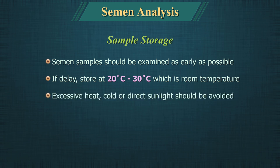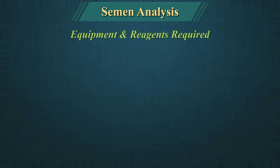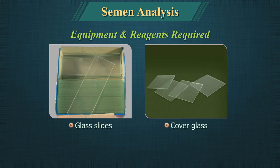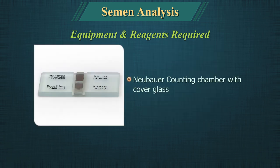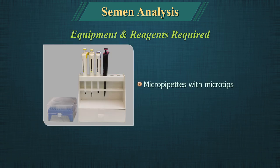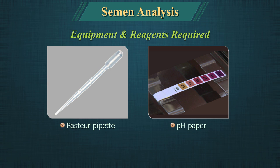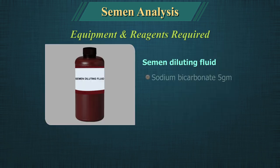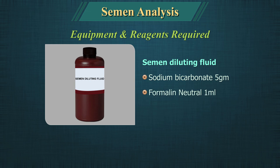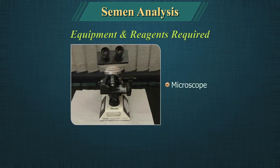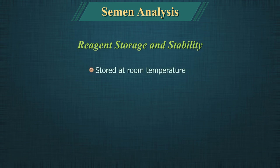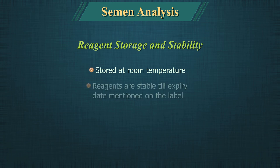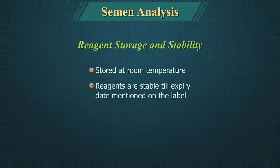Excessive heat, cold or direct sunlight should be avoided. Do not store the sample in a refrigerator. Equipment and reagents required for semen analysis include glass slides, cover glass, Nubar's counting chamber with cover glass, micro pipettes with micro tips, Pasteur's pipette, pH paper, Leishman stain, Eosin stain, semen diluting fluid containing sodium bicarbonate, formalin neutral and distilled water, and a microscope. Reagents are to be stored at room temperature and are stable till the expiry date mentioned on the label.